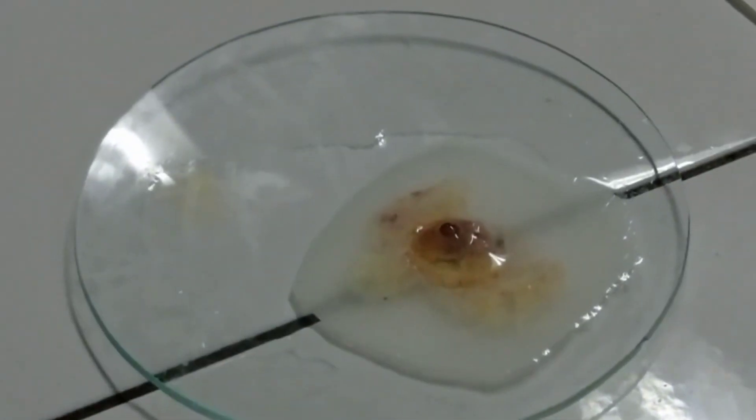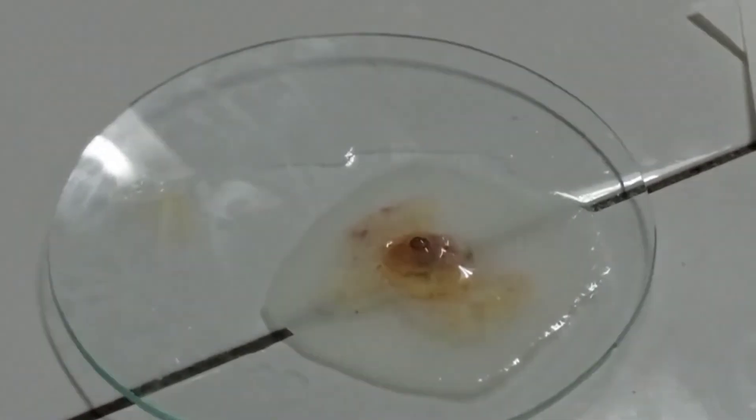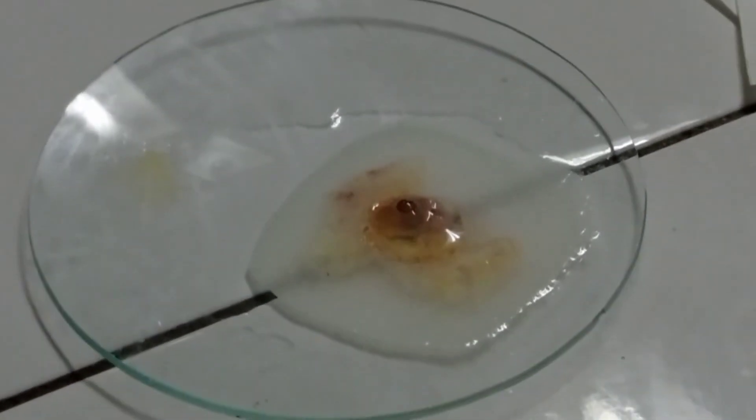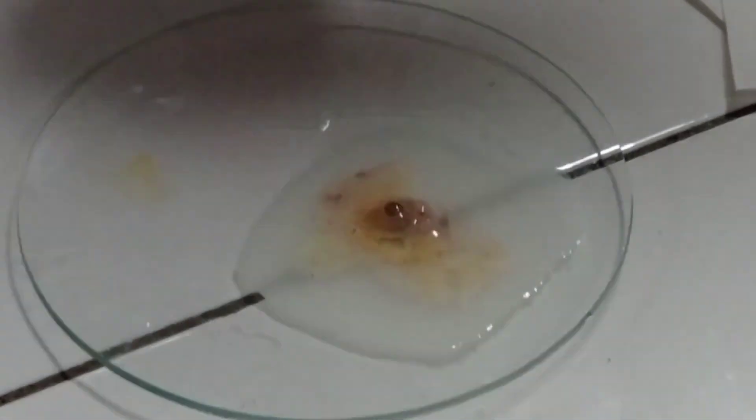Langkah terakhir, yaitu pemberian larutan formalin yang bertujuan untuk fiksasi, yang mana untuk mematikan sel-sel dalam jaringan tanpa merusak bentuk dan strukturnya, lalu melindungi dari kehancuran atau kerusakan karena embryo akan diawetkan.